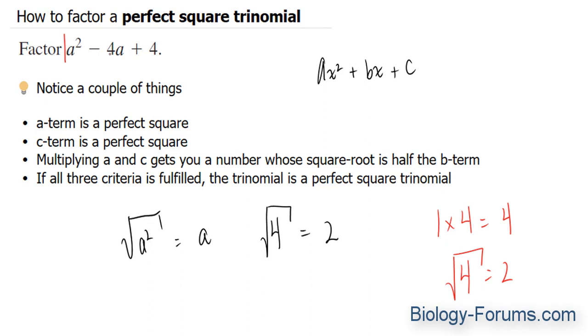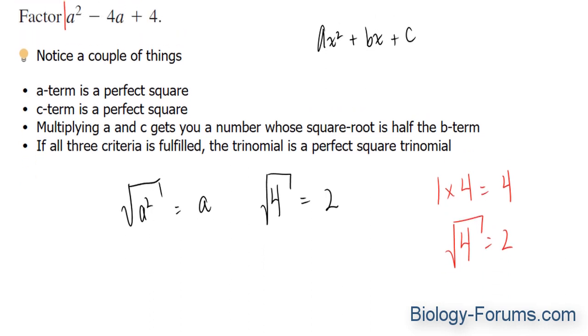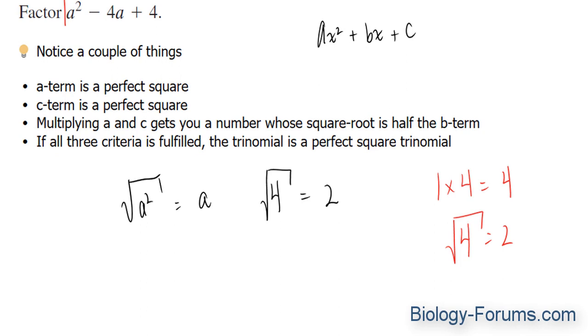So what do we do with all this information that we just found? Well, here's what you do. You look at the b term, and you'll notice that the b term has a symbol that's minus. Keep that in mind. What we do is we take our two terms, a and 2, and we use this minus, and we put a squared. And I can assure you that if you expand this expression, you will get this expression.